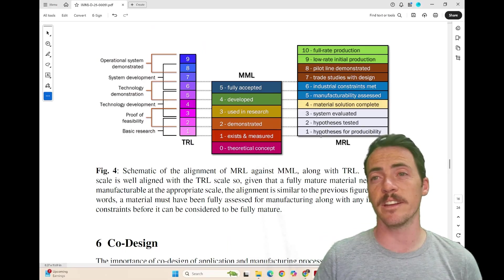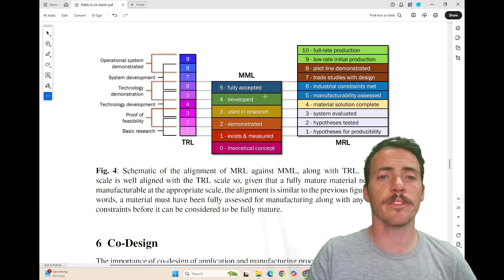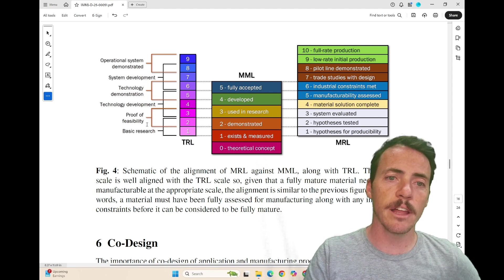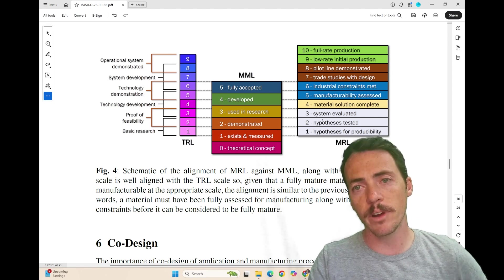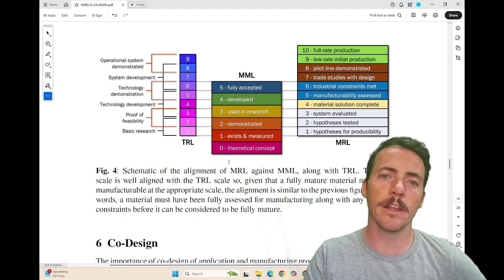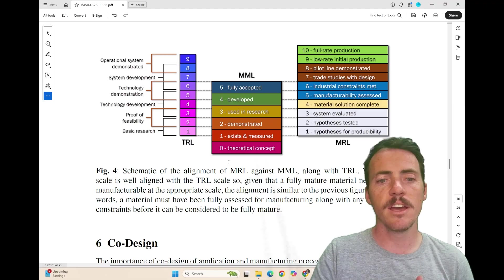There's lots of other great case studies and analysis in here. I kind of like this one where it shows the TRL levels, the manufacturing readiness levels, and then where the MML levels would sort of fit in between these.